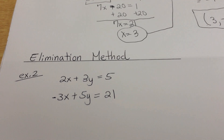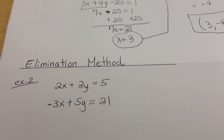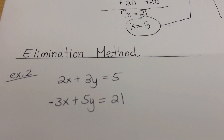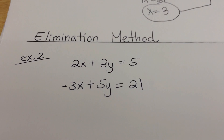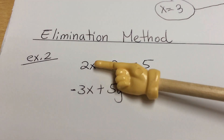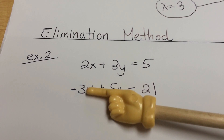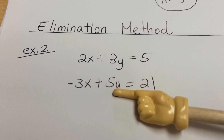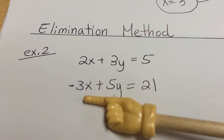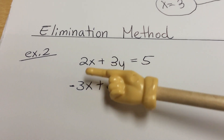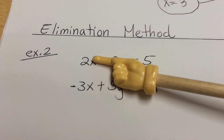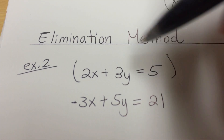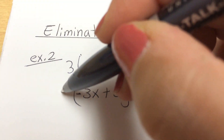Method number 2 is called the elimination method — a method from algebra 1 and algebra 2. The elimination method says I'm going to eliminate either the x variable or the y variable and start solving using algebra. When using elimination, find the lowest common number between the coefficients, similar to finding the lowest common denominator. The lowest common number between 2 and 3 is 6, so I'll multiply equation 1 by 3 and equation 2 by 2.